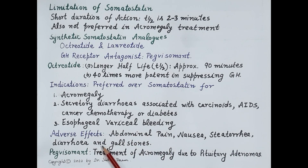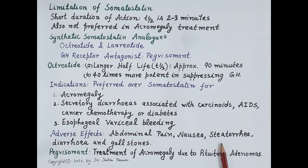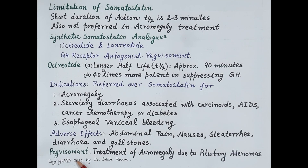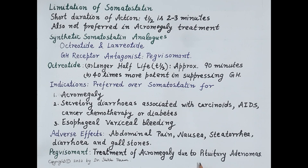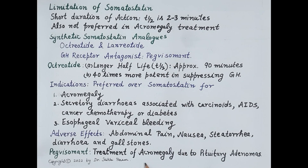Adverse effects of octreotide include abdominal pain, nausea, steatorrhea, diarrhea, and gallstones. Pegvisomant is used in the treatment of acromegaly caused by small pituitary adenomas — benign tumors of the pituitary gland that cause excessive secretion of growth hormone. These are the synthetic analogues of somatostatin.